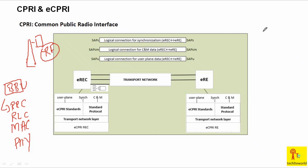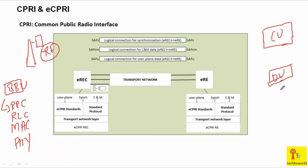In our current deployment, we are deploying our CU in some data center - that is called a cost-based data center with generic hardware. The DU is also deployed in some server, and as per O-RAN, which we will discuss in the next webinar, the distributed unit can be 40 kilometers apart from the RF unit.